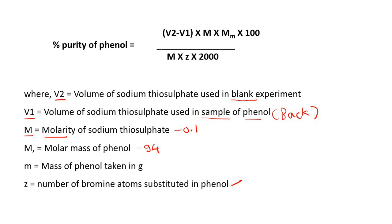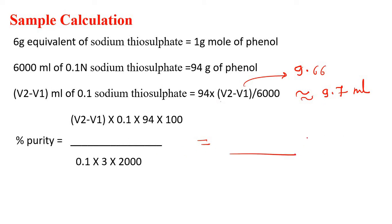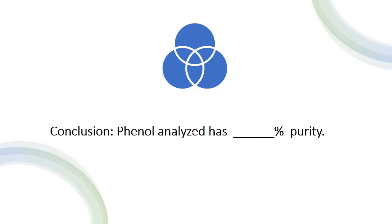Putting these values into the percentage purity formula: V2 − V1 = 9.66 ml, approximately 9.7 ml. Substituting all values gives the percentage purity of the given phenol sample as 15.19%, approximately 15.2%. Therefore, the phenol analyzed has 15.19% purity. In this way, the percentage phenol in a given sample is determined.